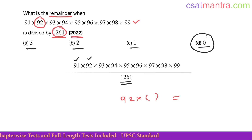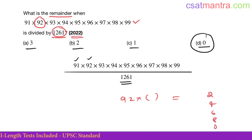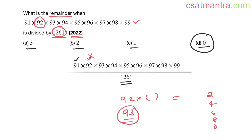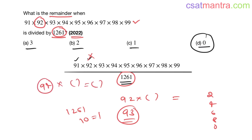Since 1261 has last digit 1, and 92 into something would give a last digit of 2, 4, 6, 8, or 0 — 92 also cannot work. For 93: 93 is divisible by 3, but 1261 is not divisible by 3 — the digit sum gives remainder 1 — so we cannot use 93. 94 is again an even number, and even times anything is even, but 1261 is odd.